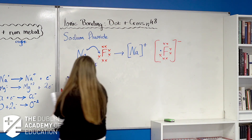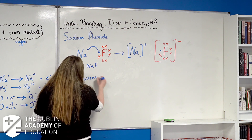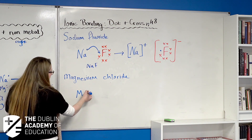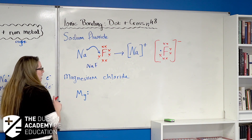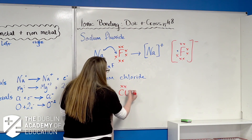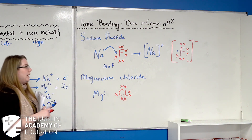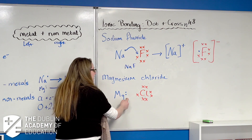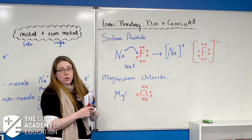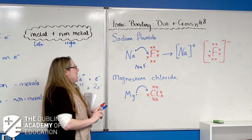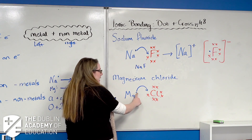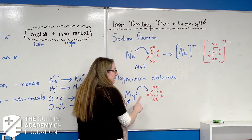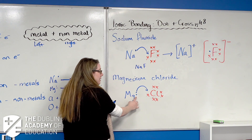For magnesium chloride: magnesium is in group two, so it has two electrons in its outer energy level. Chlorine is in group seven, so it has seven electrons in its outer energy level. Chlorine needs one more electron to have a stable octet. Magnesium needs to donate two to have a stable octet, because the next energy level in — closer to the nucleus — is already full and stable.